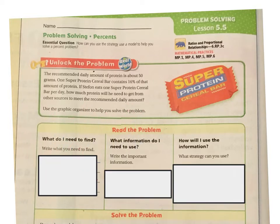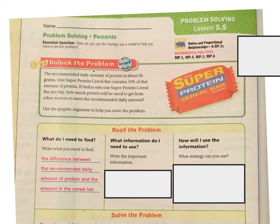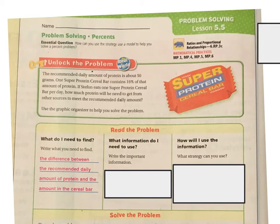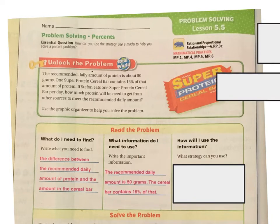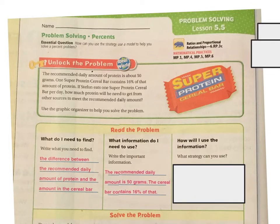What do I need to find? You need to find the difference between the recommended daily amount of protein and the amount in the cereal bar. What information do I need to use? You need to use the recommended daily amount, which was 50 grams, and the cereal bar, which contains 16% of that.